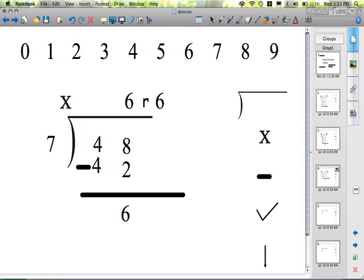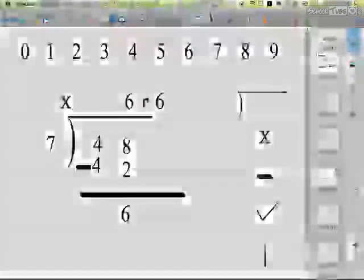7 goes into 48, 6. 6 times 7, 42. Subtract. I have 6 left. Remainder of 6.